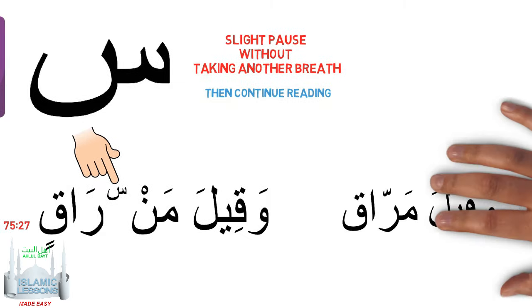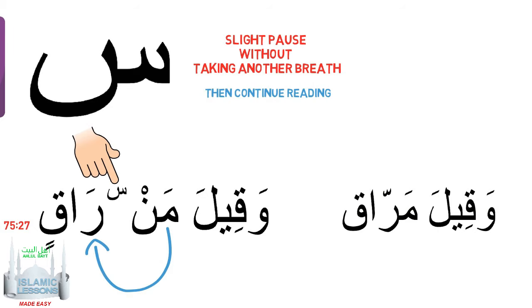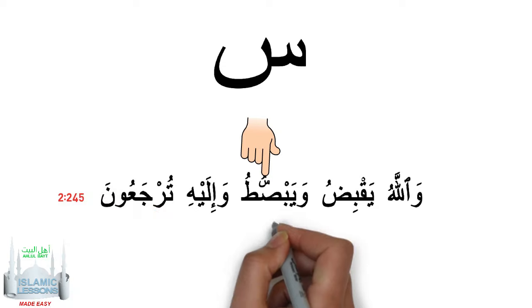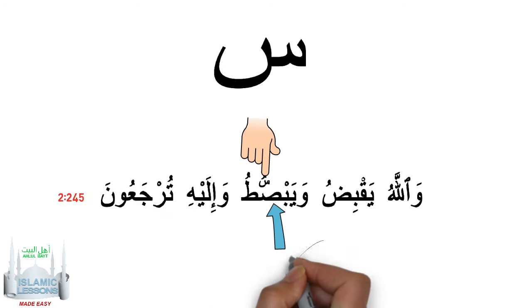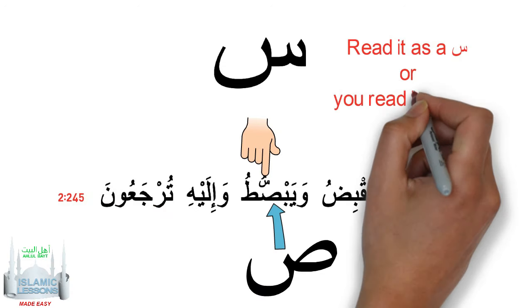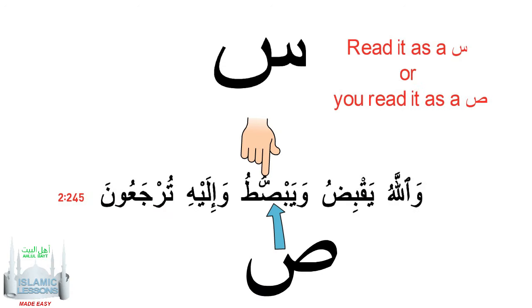It is not pronounced 'wa qeela mar raaq' with the yarmaloon ru as explained in previous lessons. Sometimes you see the seen on top of a saad — this is a different rule. You either read it as a seen or you read it as a saad.